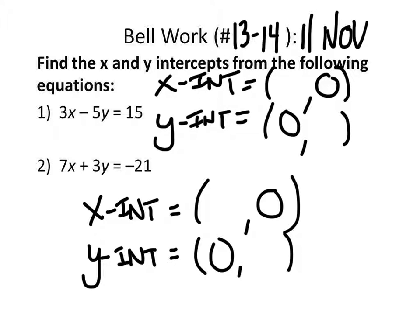X and Y intercepts. The X intercept is C divided by A, so it's 15 divided by 3, which is 5. And then the Y intercept would be negative 3.